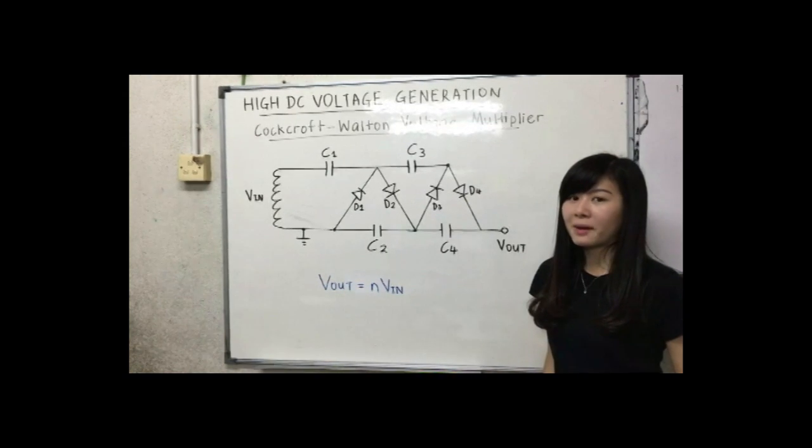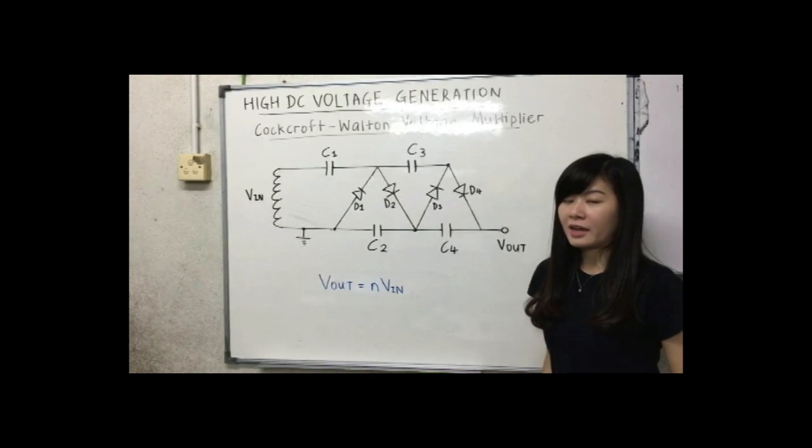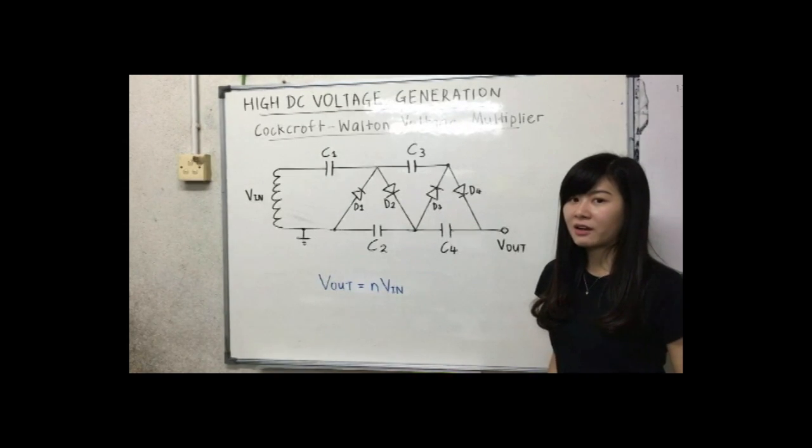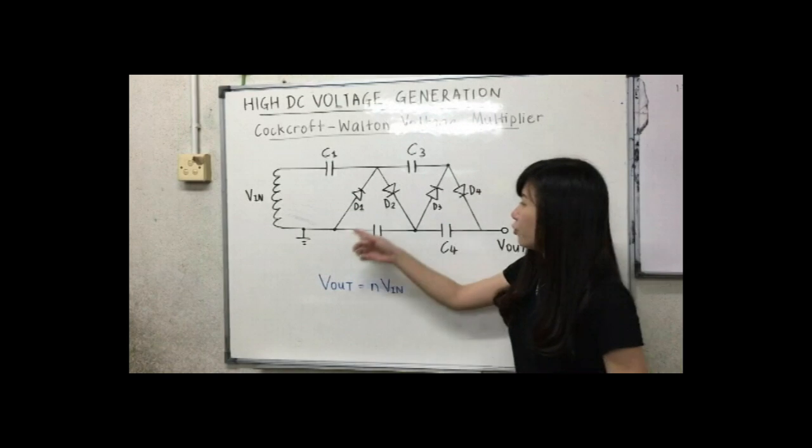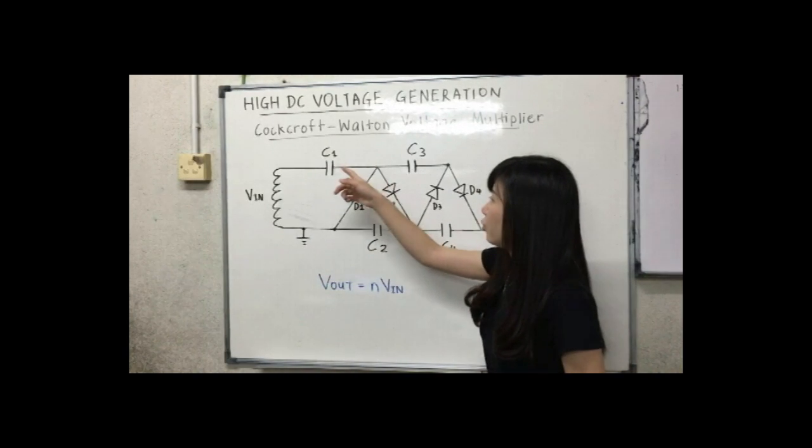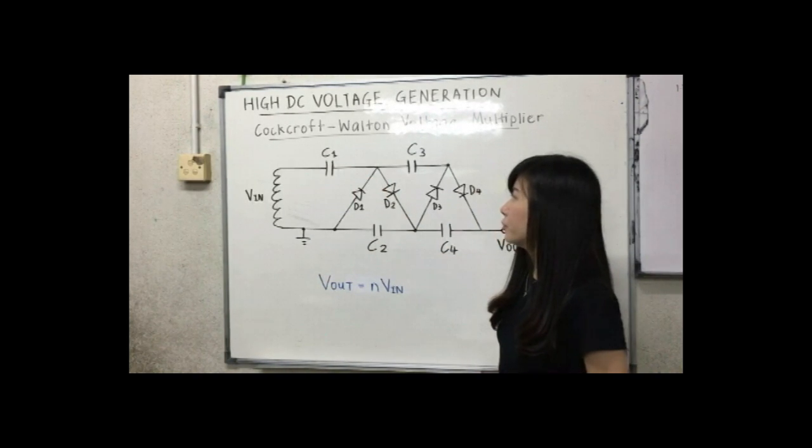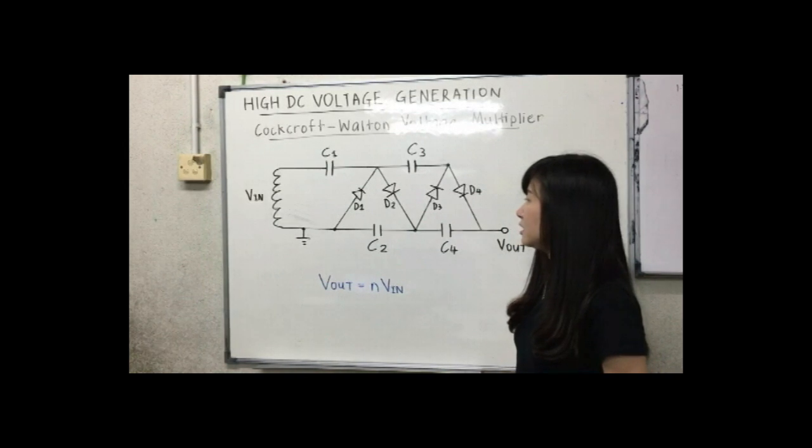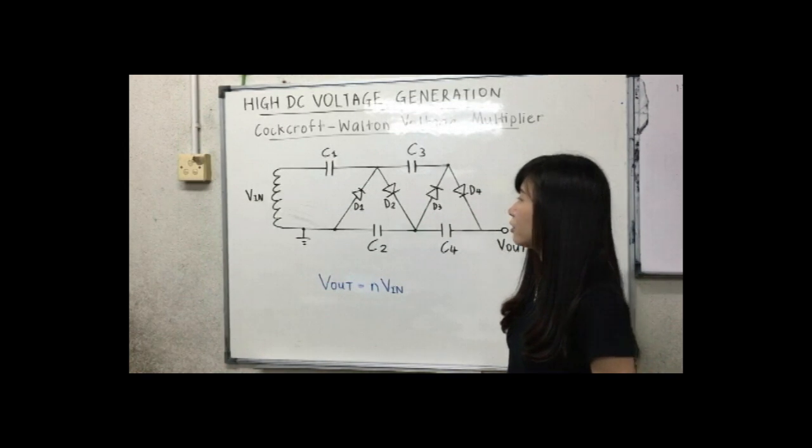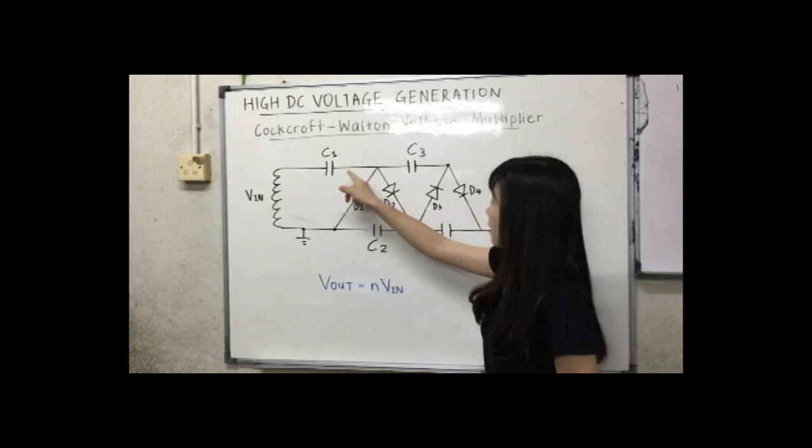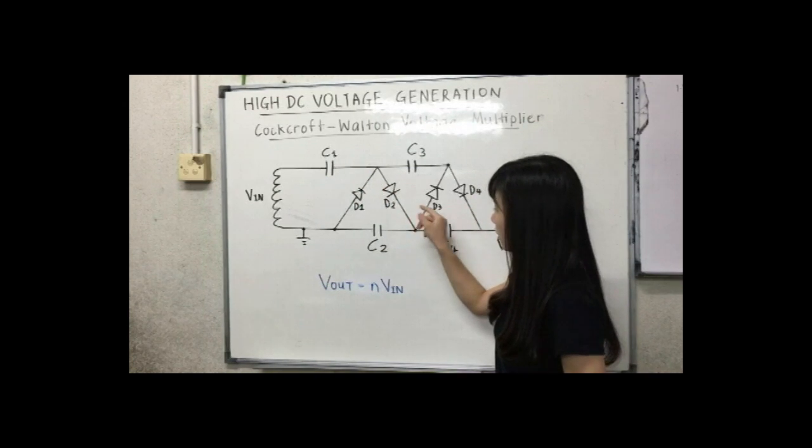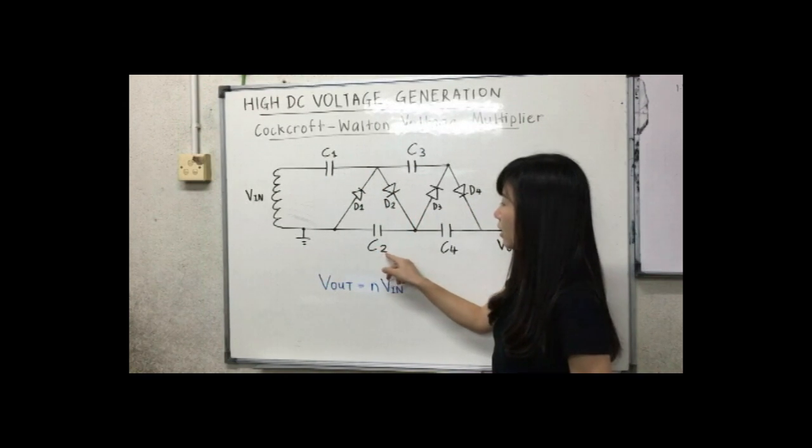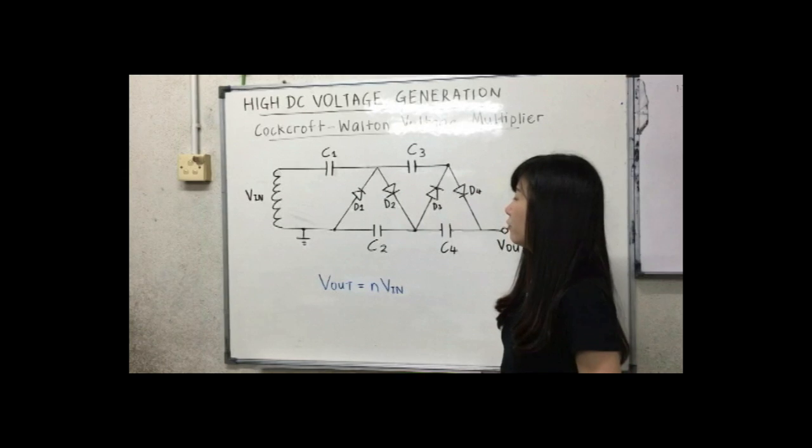I will be using pulsating DC voltage as the input and during negative half cycle, current will go through D1 and charge up C1 up to the peak input voltage, let's say Vp. Then during the positive half cycle, current will go through C1, D2 and charge up C2 up to the peak input voltage Vp again.